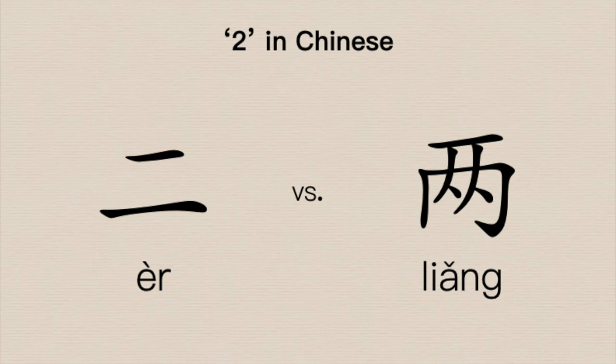We have 二 (èr) and we have 两 (liǎng). The simple explanation your teacher might give you is that 二 is the number two and 两 is 'two of something.' That doesn't immediately make sense coming from an English-speaking background, so I'm going to break it down and give you a few examples back to back of how they mean different things, and hopefully it'll start to clear things up.